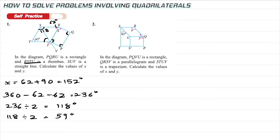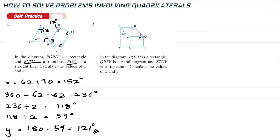Since SUV is a straight line, to get the value of y: y = 180 − 59 = 121 degrees. Done.